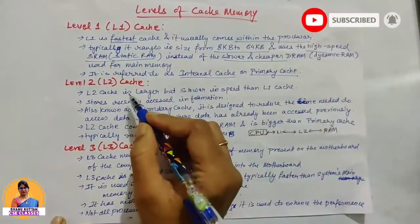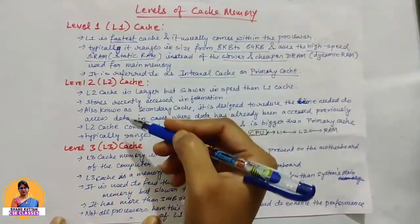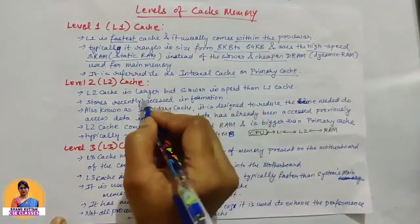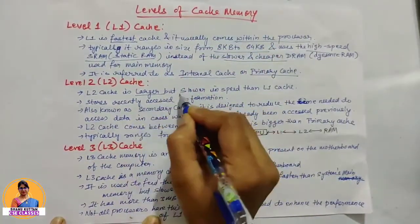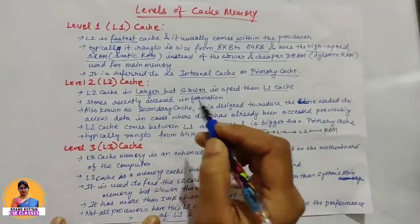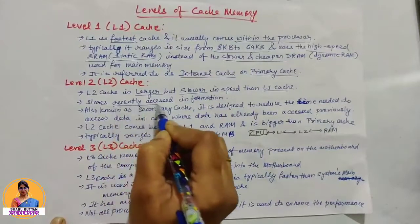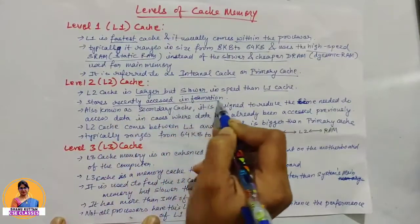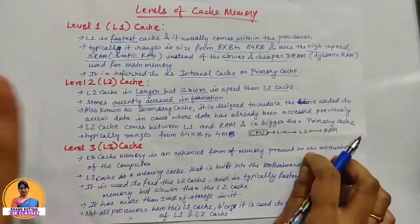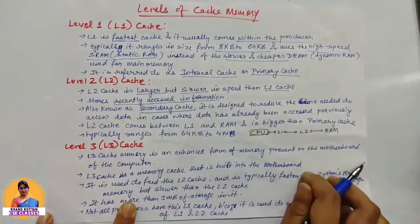Next is Level 2 cache. L2 cache is a little larger than Level 1 but a little slower than L1 cache. In L2 cache, the most recently accessed data or most frequently used data is stored. That is why we call it secondary cache.